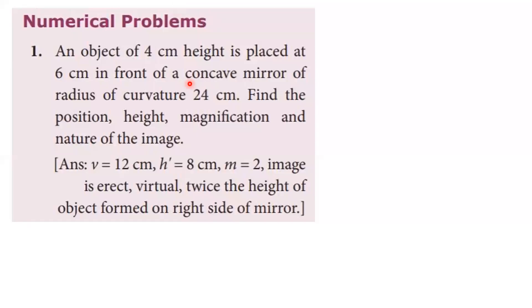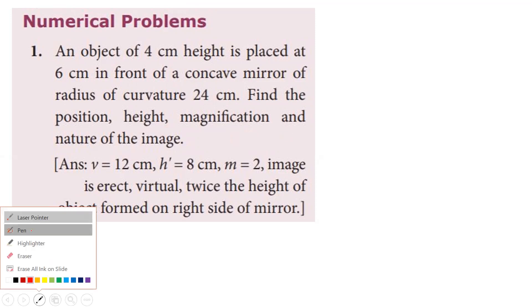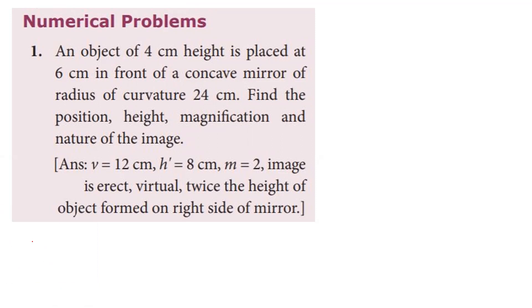Unit six, optics lesson: numerical problems. Problem one — an object of four centimeter height is placed at six centimeter in front of a concave mirror of radius of curvature 24 centimeter. Find the position, height, magnification, and nature of the image. Given: object height is four centimeters.